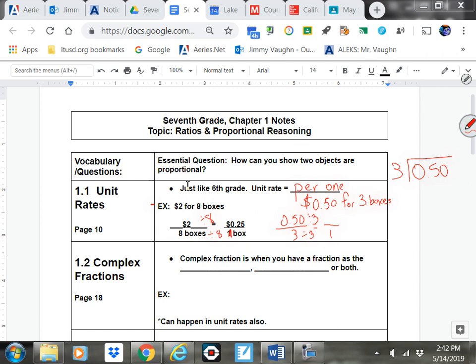To get this to a unit rate, we're going to divide the top and bottom by three. And 50 cents divided by three looks like it might be pretty yucky. You're just going to bust it out, three into 50 cents, just like you know how to do. That's going to be .16 repeating. Or, since it's money, you can round that off to 17 cents. And then you could compare them and know that 50 cents for three boxes is a better deal than $2 for eight boxes.